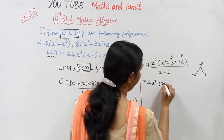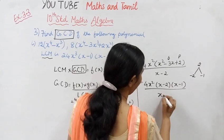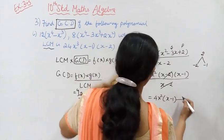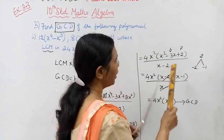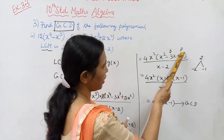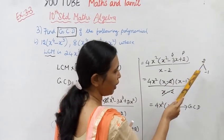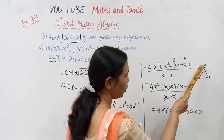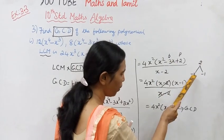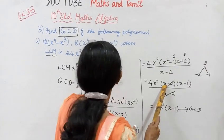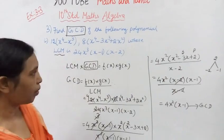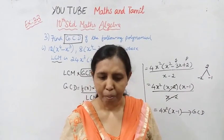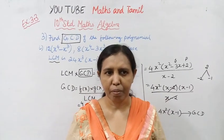Now cancel (x minus 2) from numerator and denominator. The result is 4x² into (x minus 1). This is the value of the GCD. Okay students.